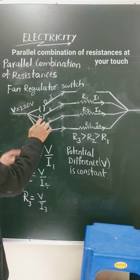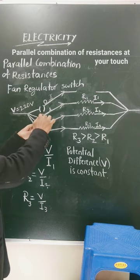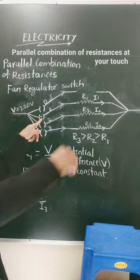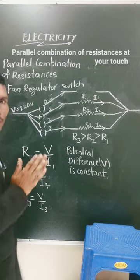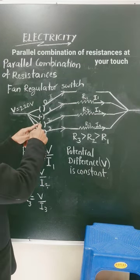When we press the second button, that is numbered 1, it supplies the current to the motor of the fan through resistance 1, that is R1, current will be I1. And when you press the second button, it will be I2.